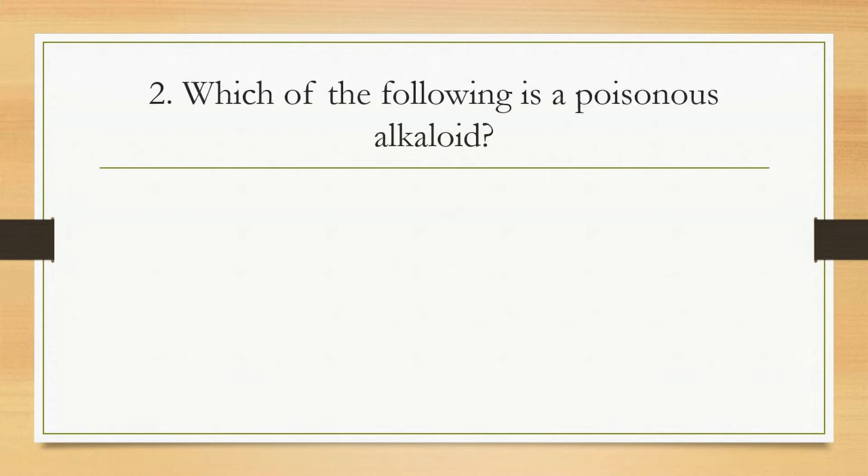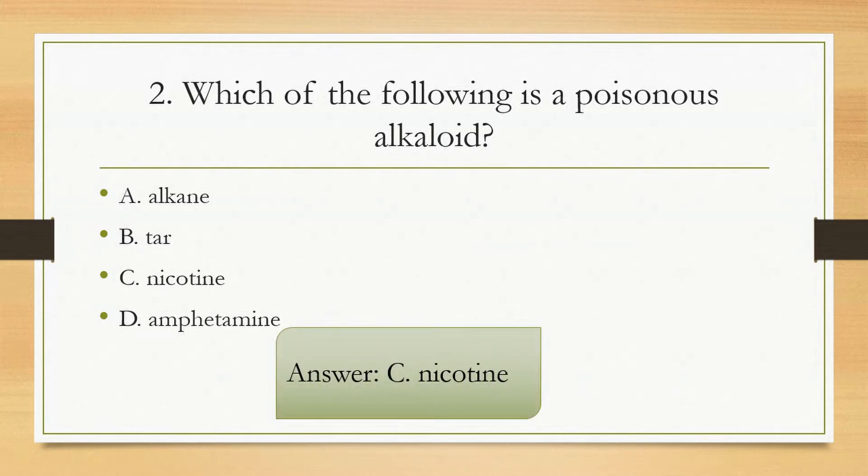Number 2. Which of the following is a poisonous alkaloid? Letter A, Alkane. Letter B, Tar. Letter C, Nicotine. Or Letter D, Amphetamine. The answer is Letter C, Nicotine.